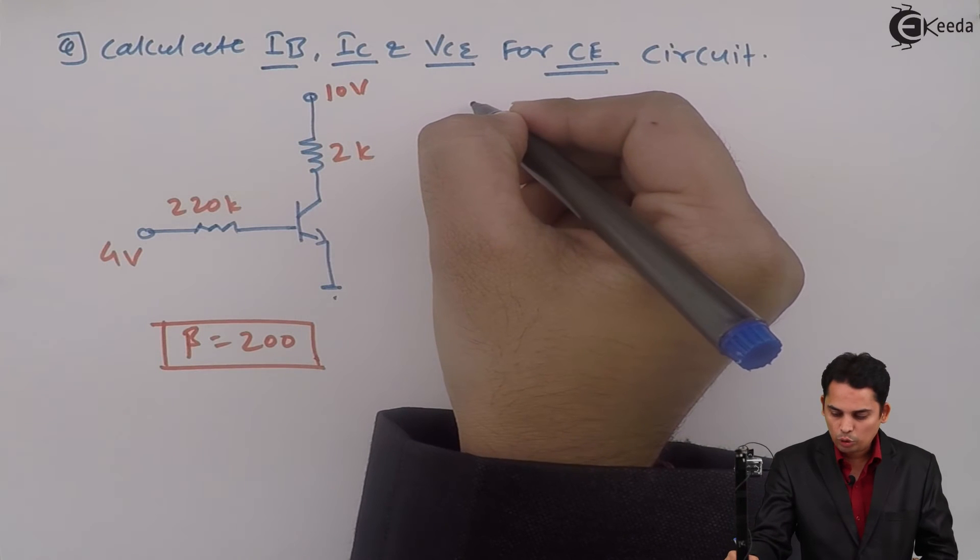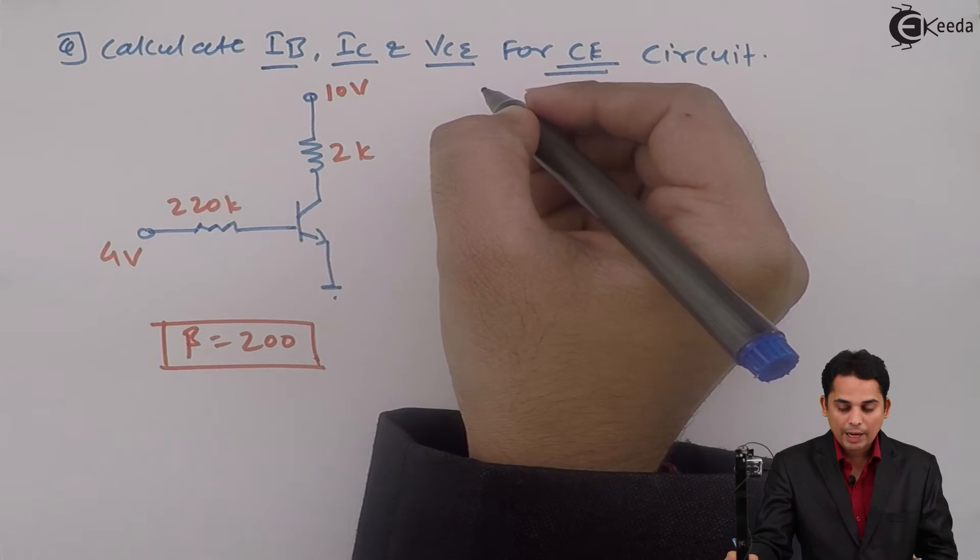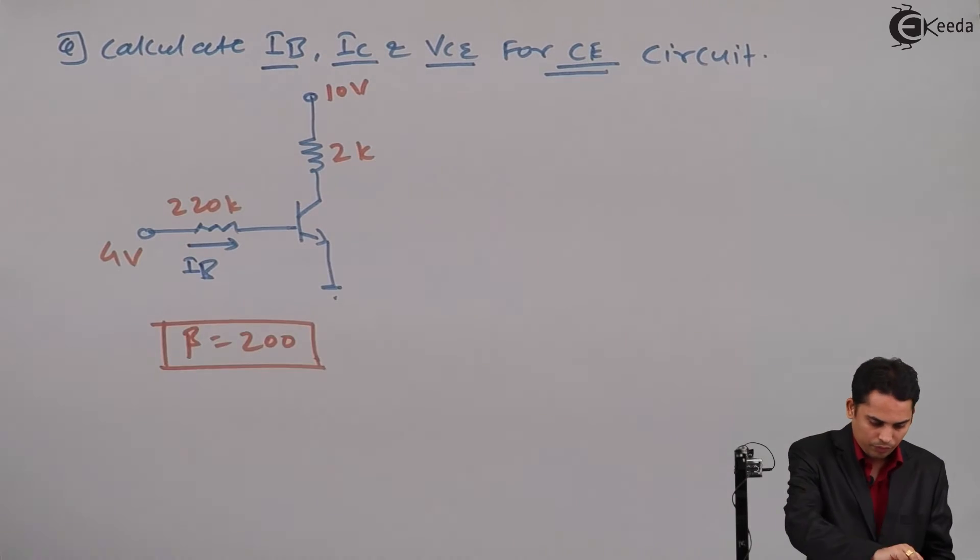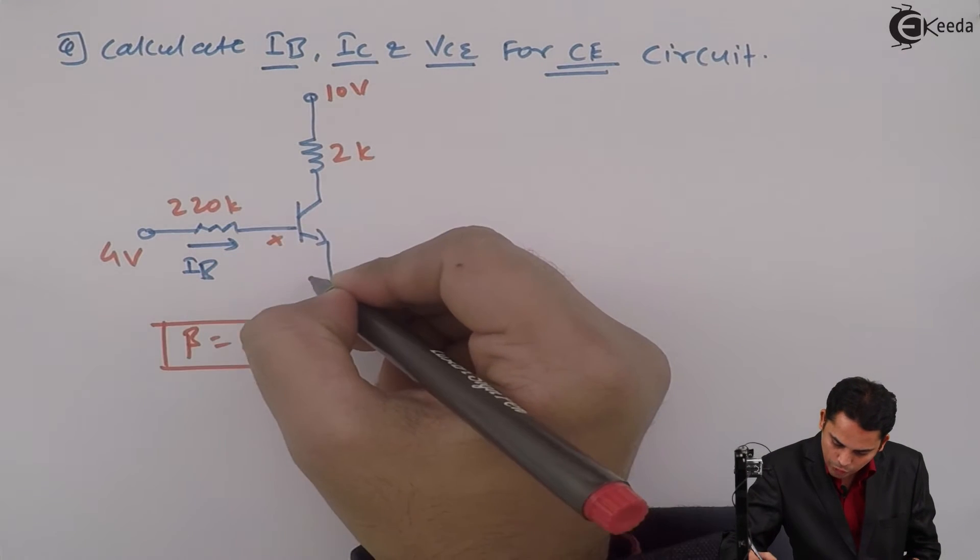Apply KVL to the input in order to get IB. So current flowing from this will be base current IB. Voltage between these two points will be VBE.